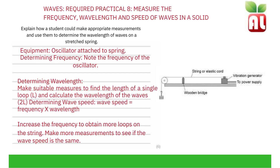Measuring the frequency, wavelength and speed of waves in a solid — required practical. Explain how a student could make appropriate measurements and use them to determine the wavelength of waves on a stretched spring. The equipment used is an oscillator which will generate our wave, attached to a spring. To determine frequency, note down the frequency of the oscillator. To determine wavelength, make suitable measurements to find the length of a single loop and calculate the wavelength. Determine wave speed by multiplying frequency by wavelength. Increase the frequency to obtain more loops on the string and make more measurements to see if the wave speed remains the same.